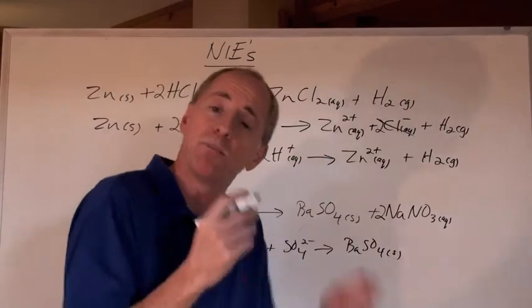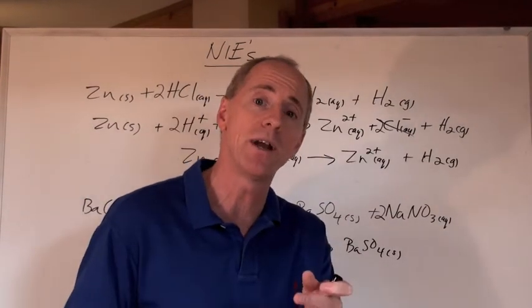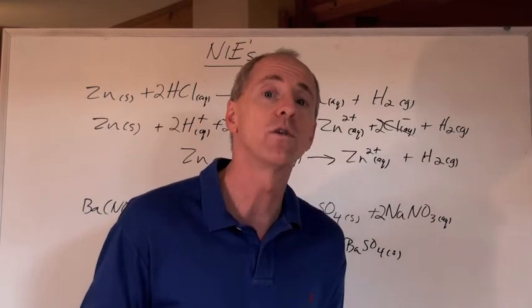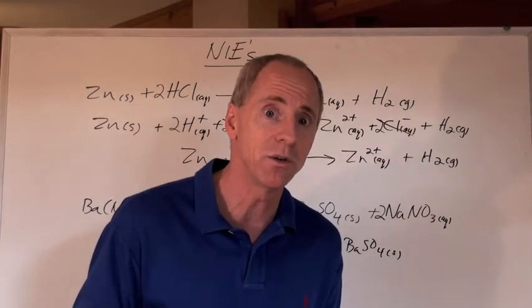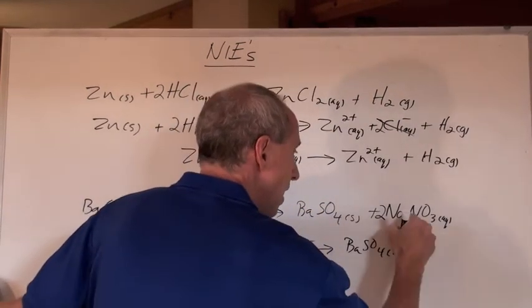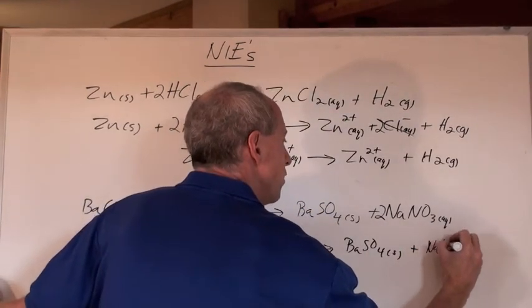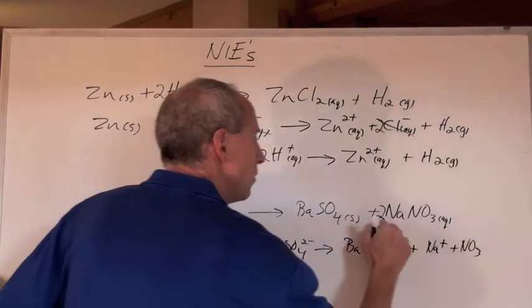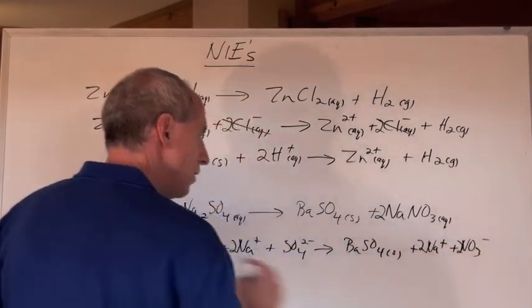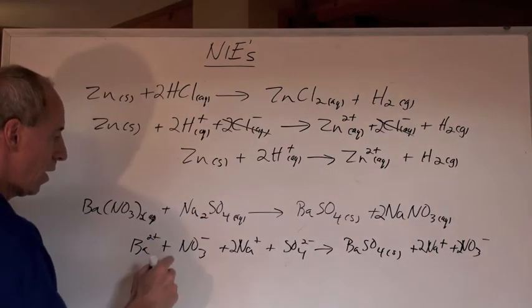It's a precipitate. When you get a double replacement reaction, look for a precipitate on a solubility table, or look for water forming in a neutralization reaction. That would be a liquid. You don't break that down either. And then you're going to have Na positive here, and nitrate ions, and since there's two of each of those ions, two of those and two of those in solution.